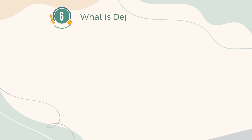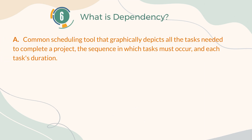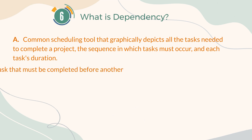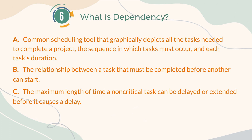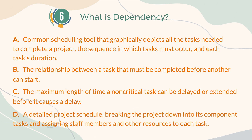Number 6. What is dependency? A. A common scheduling tool that graphically depicts all the tasks needed to complete a project, the sequence in which tasks must occur, and each task's duration. B. The relationship between a task that must be completed before another can start. C. The maximum length of time a non-critical task can be delayed or extended before it causes a delay. D. A detailed project schedule, breaking the project down into its component tasks and assigning staff members and other resources to each task.